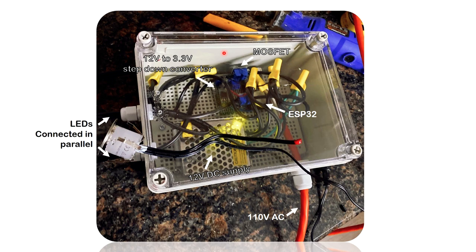Once I confirmed everything was working, I put it all into a waterproof box. There's a 12-volt power supply powered from 110-volt AC, which is a 2-amp supply — plenty to power many LEDs, though I'll eventually upgrade to a beefier one. The microcontroller and MOSFETs are all inside. I'm using two different MOSFETs for two different GPIOs, one for each section of the deck.